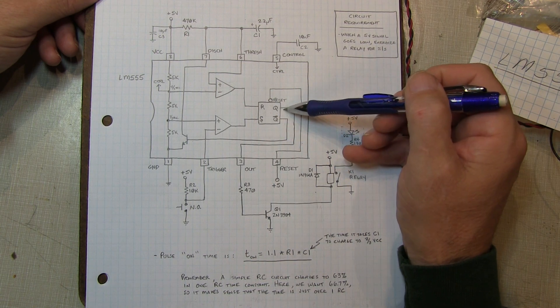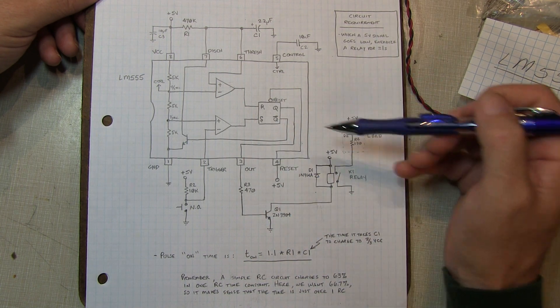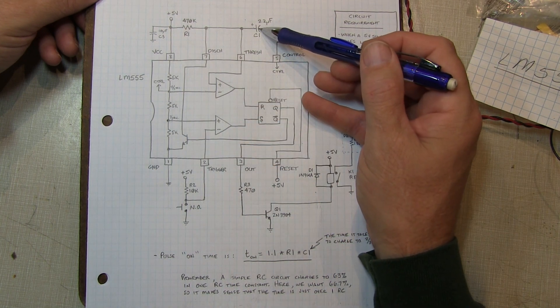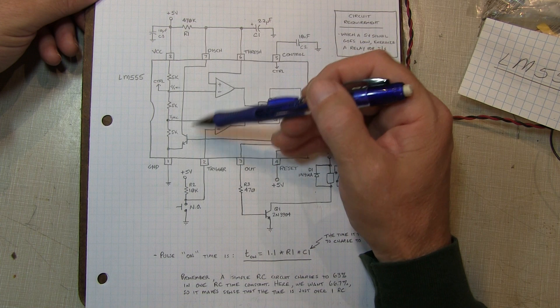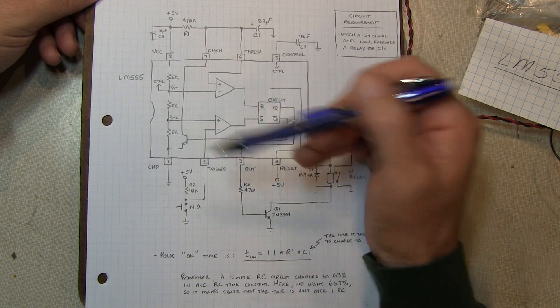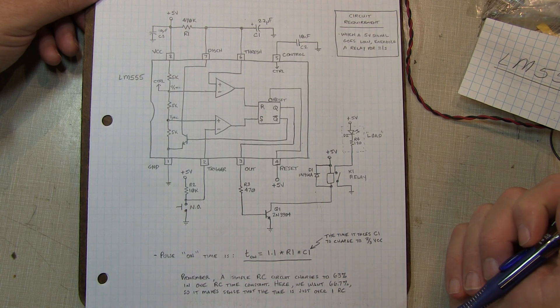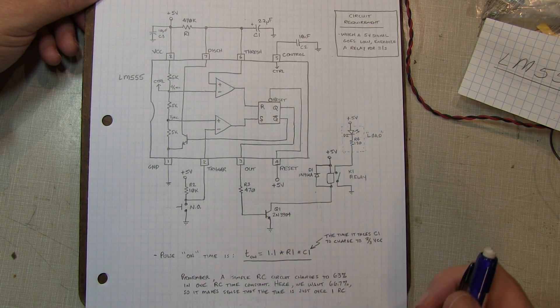At which point this comparator then goes high and resets the flip-flop. As soon as that happens, the output goes low again. We turn the relay off, and the discharge transistor comes on and quickly takes the charge off of this capacitor and brings that voltage back down to the saturation voltage of this transistor. And again, we're going to sit there until we trigger again.